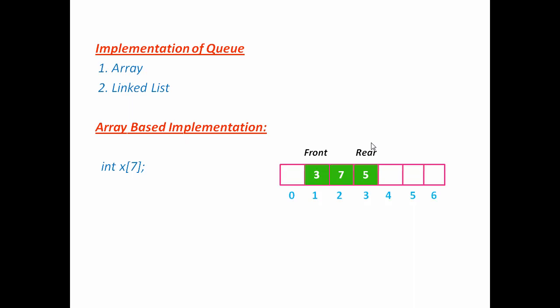Let's see how to insert an element in the Queue. I am going to insert 1. First, increment Rear by 1. New Rear is at index 4, so insert 1 at index 4. Next I am going to insert 9. Increment Rear by 1, and then insert the element at the new Rear position. Next we learn how to delete an element. To delete an element, we just increment Front by 1. New Front is at index 2, so the element 3 at index 1 is no longer part of our Queue. It doesn't matter if the value at index 1 is present — when we use that cell, we just overwrite it.